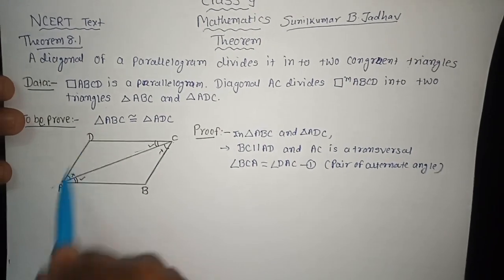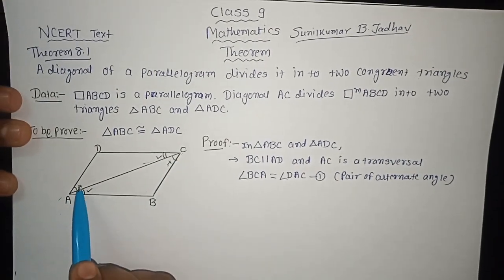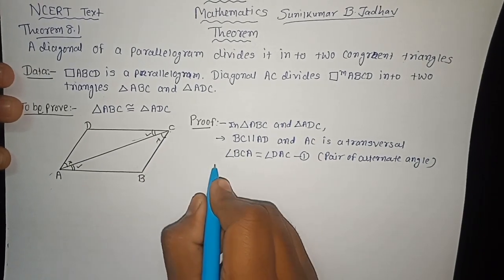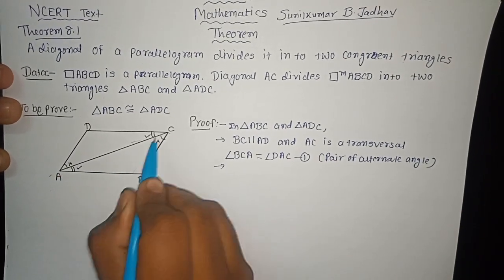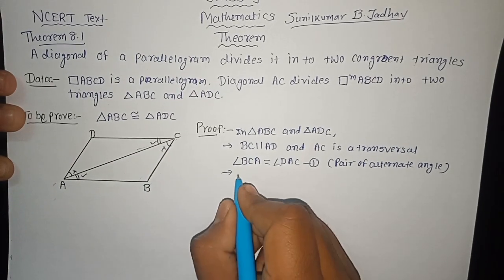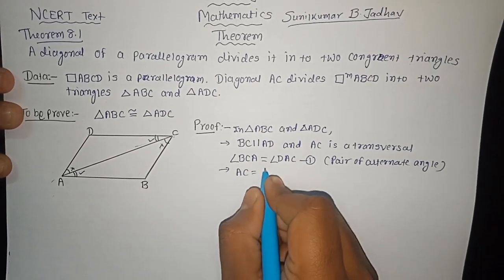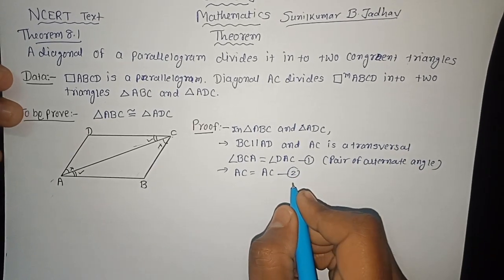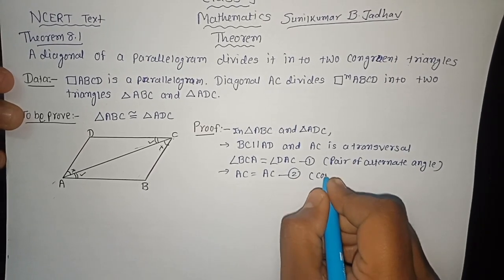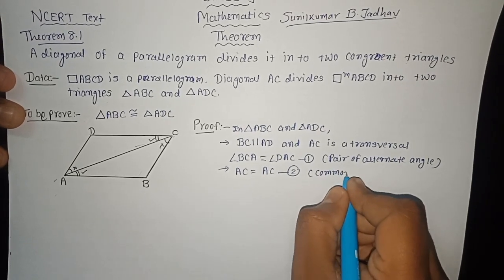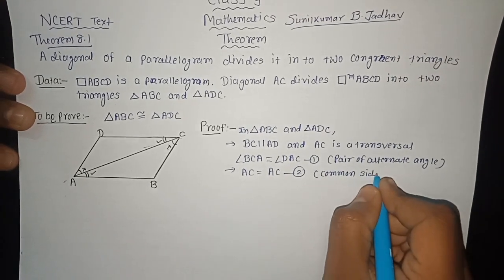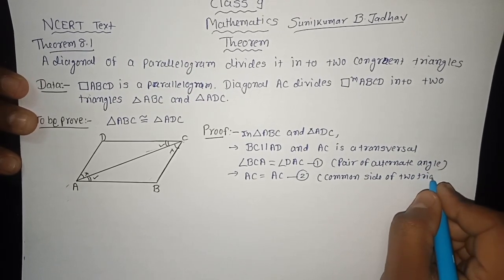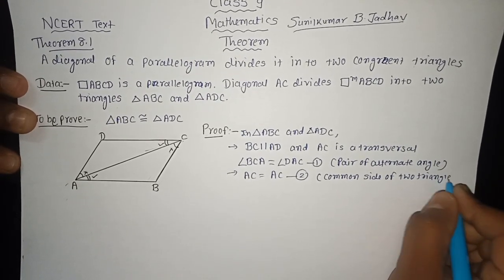Now, you can see that in both these triangles, AC is a common side. So I will write: AC is equal to AC. Let me give this equation number 2 — common side of the two triangles.